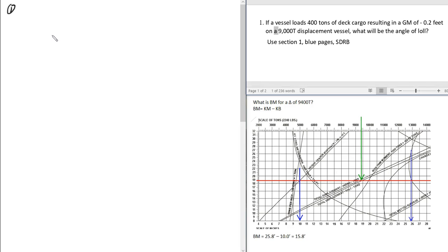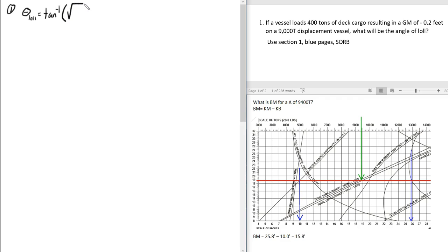The formula we want to solve for the angle of Loll, for theta, is: theta (Loll) equals the inverse tangent of the square root of 2 times GM over BM. We take the square root of that whole term and then the inverse tangent on that result.